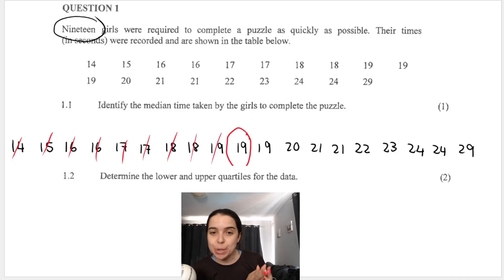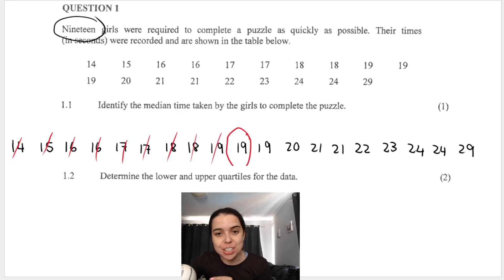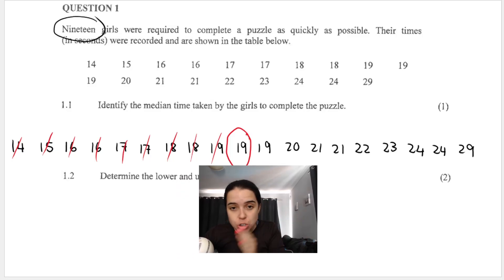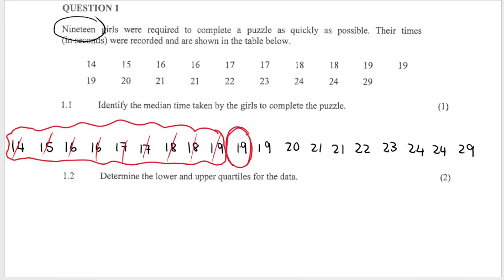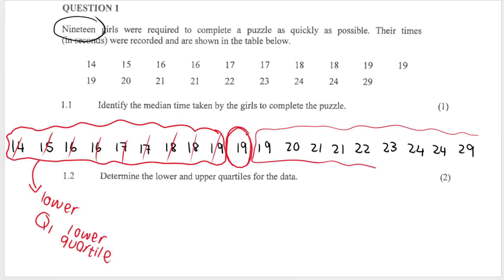Our next question wants the lower and upper quartiles for the data — the lower quartile or Q1, and the upper quartile or Q3. When we find the median, it breaks our data set up into the lower and upper ends. Not including the median itself, the lower portion of the data set is used to find Q1, and the upper portion is used to find Q3.